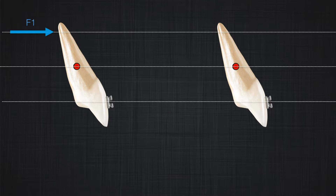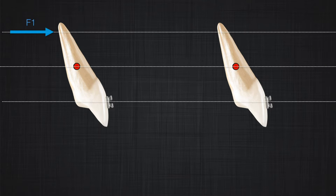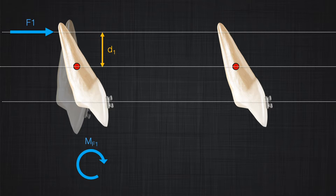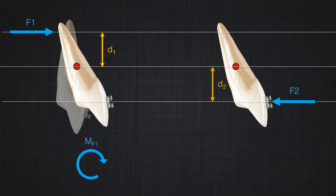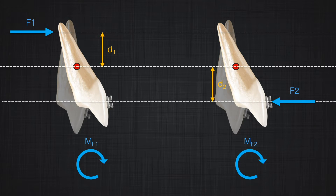Another interesting characteristic of the moment is that we can produce a moment with completely different types of forces, sometimes even opposite forces. If you look at the left side of your screen, you will see a force applied to the apex of the tooth. The force applied on the apex does not pass through the center of resistance, and therefore it produces a moment. The magnitude of this moment is equal to the magnitude of force F1 times the distance D, producing moment MF1. On the right side, there is another force F2 — assuming F2 equals F1 — applied at the same distance D from the center of resistance, also producing moment MF2.